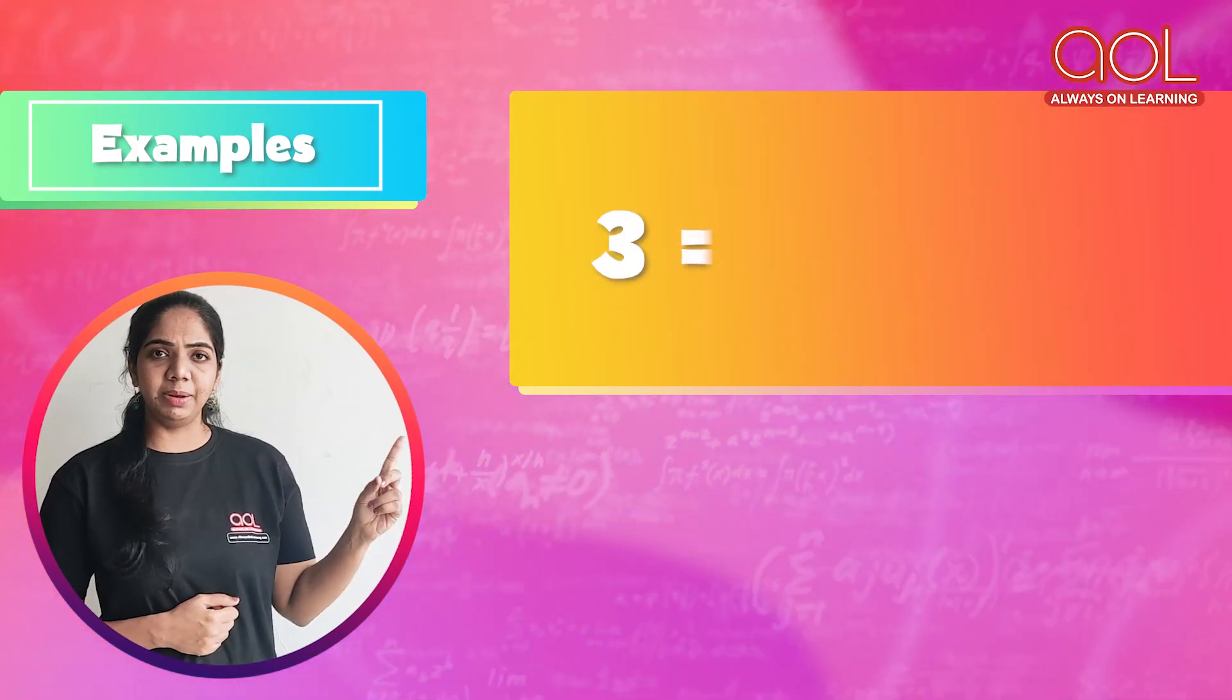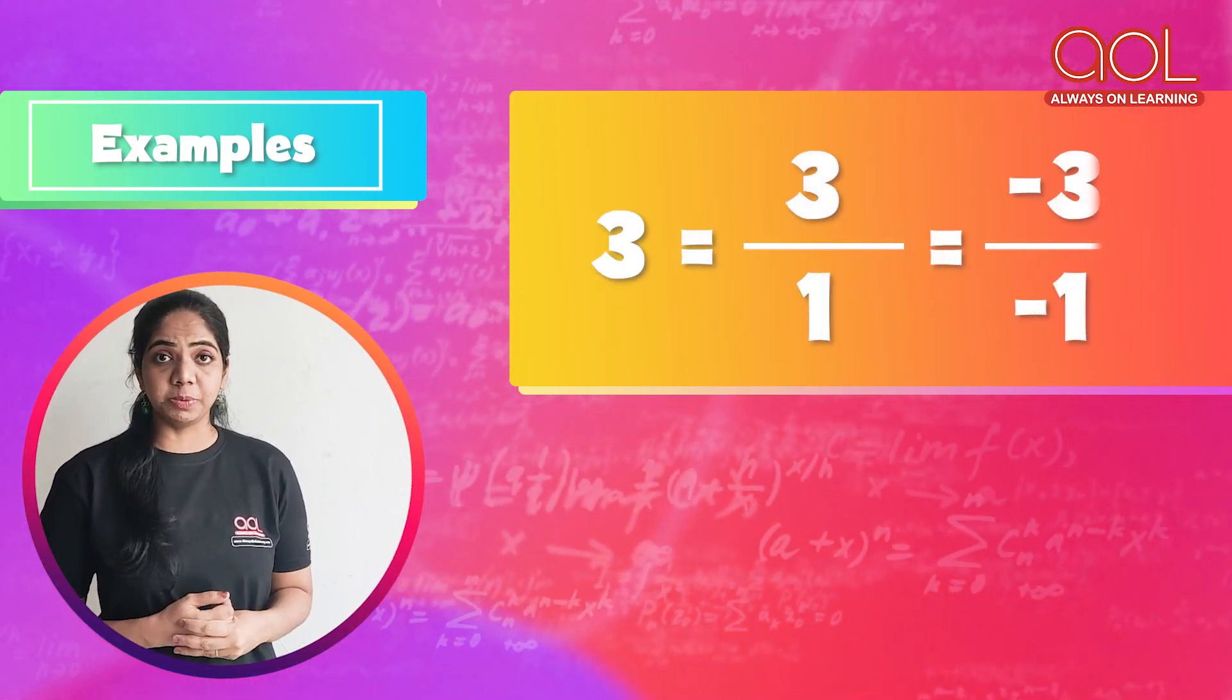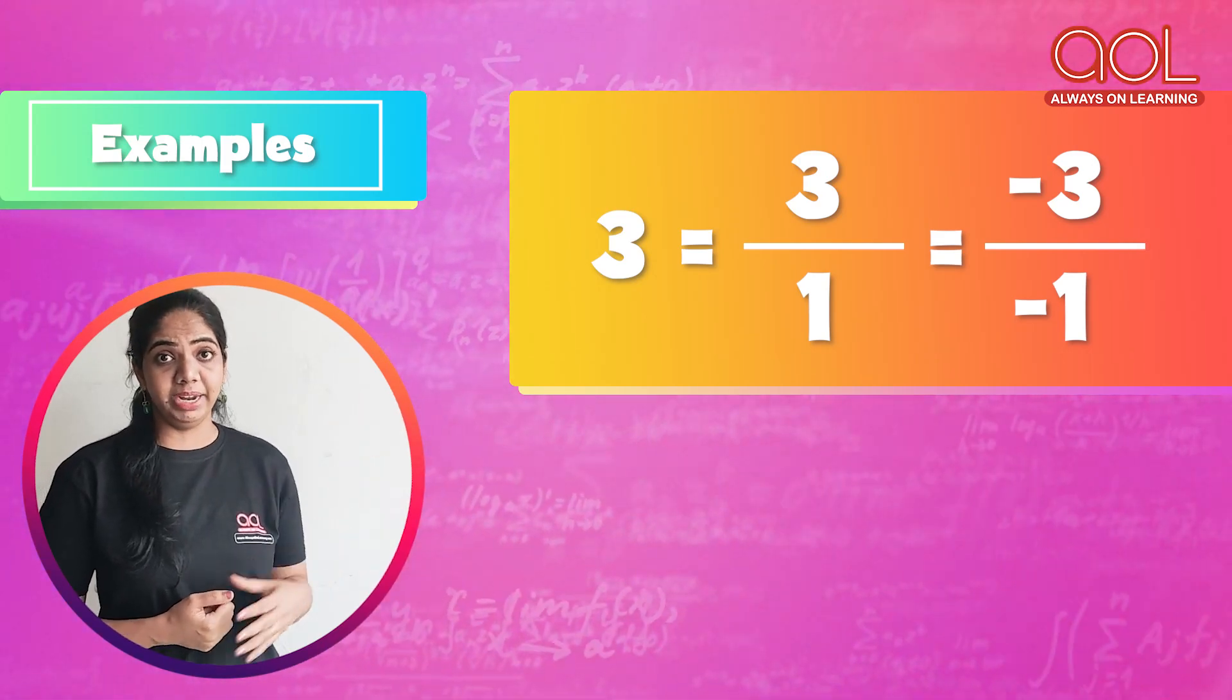Now, let us take some examples. Is 3 a rational number? Yes, 3 can be expressed as 3 by 1. 3 can also be expressed as minus 3 by minus 1.